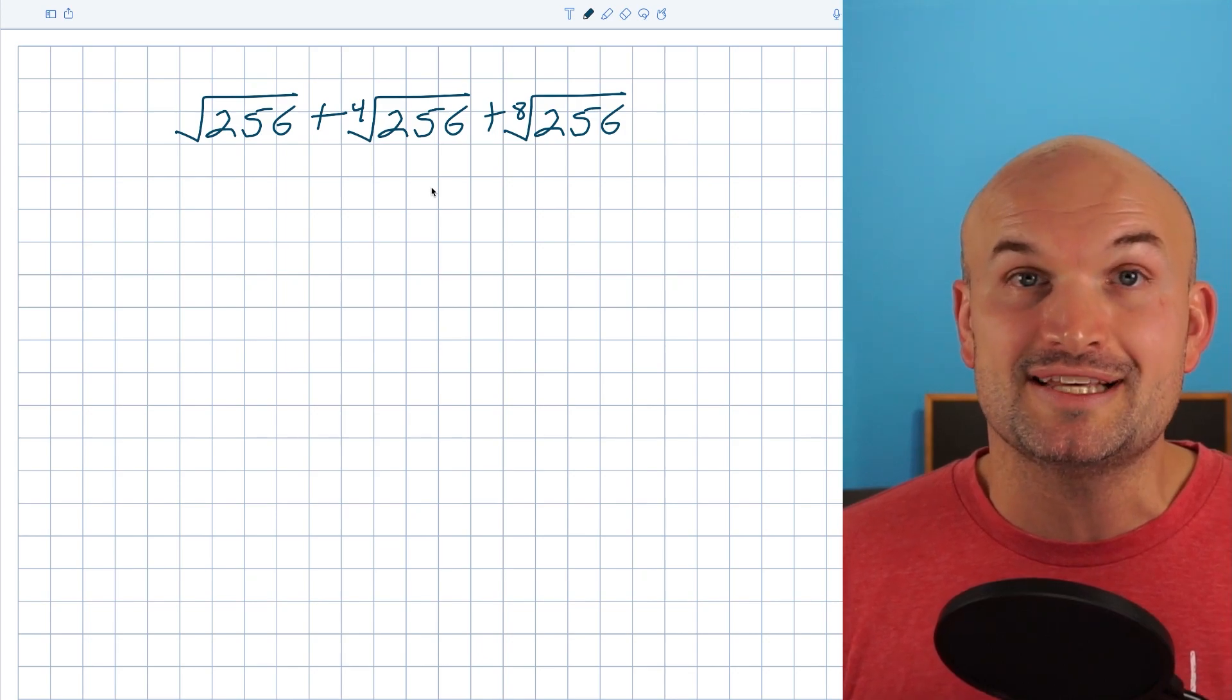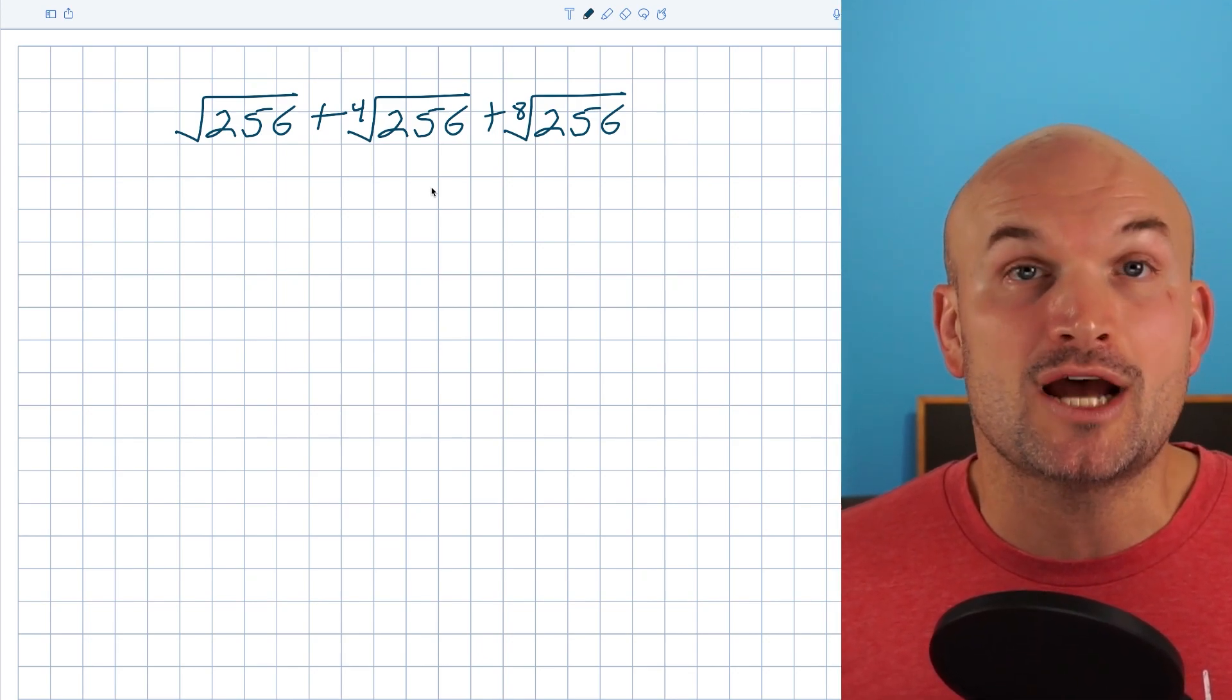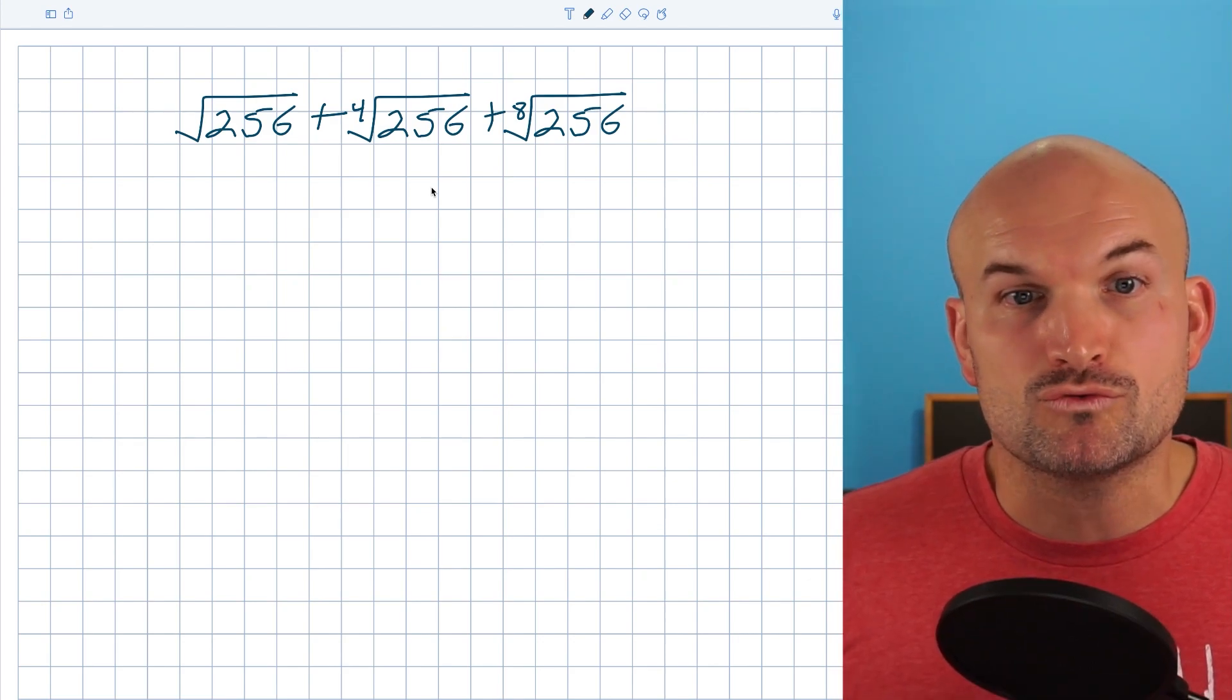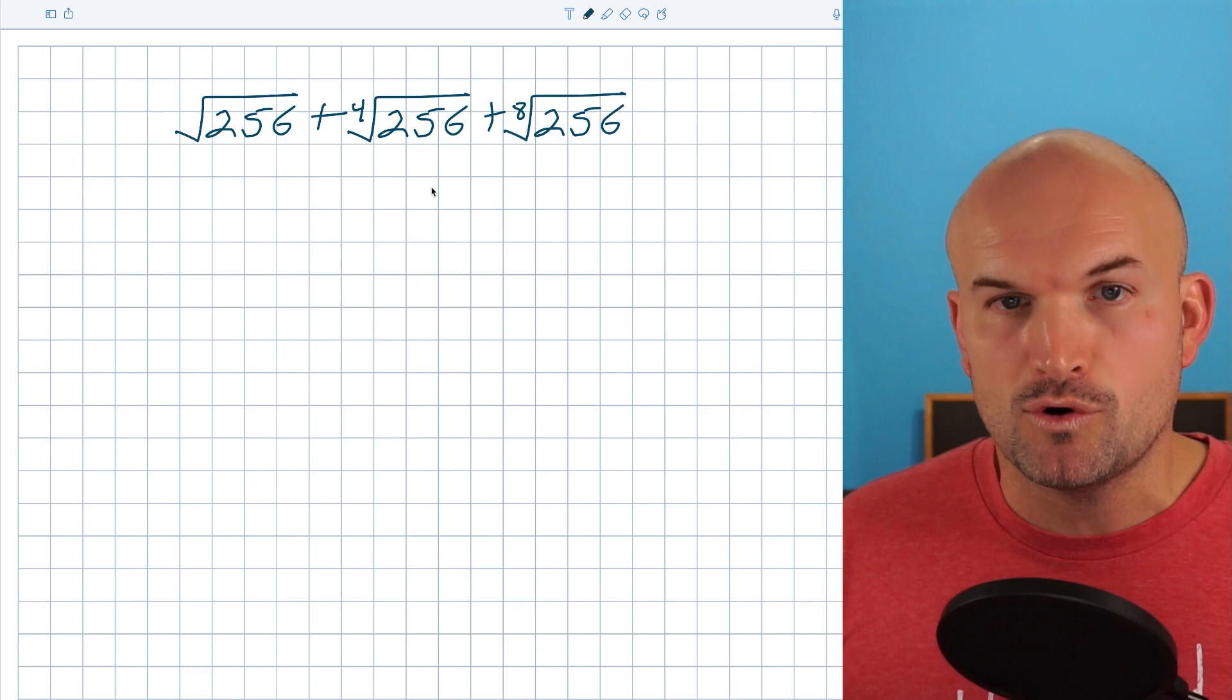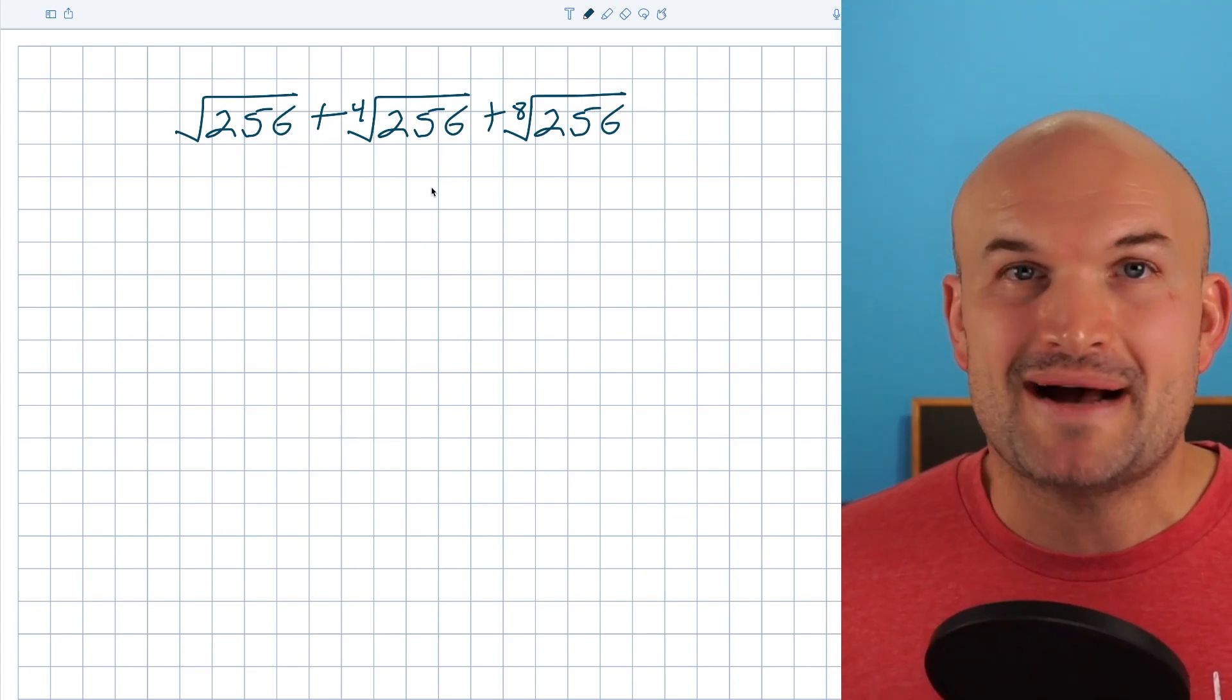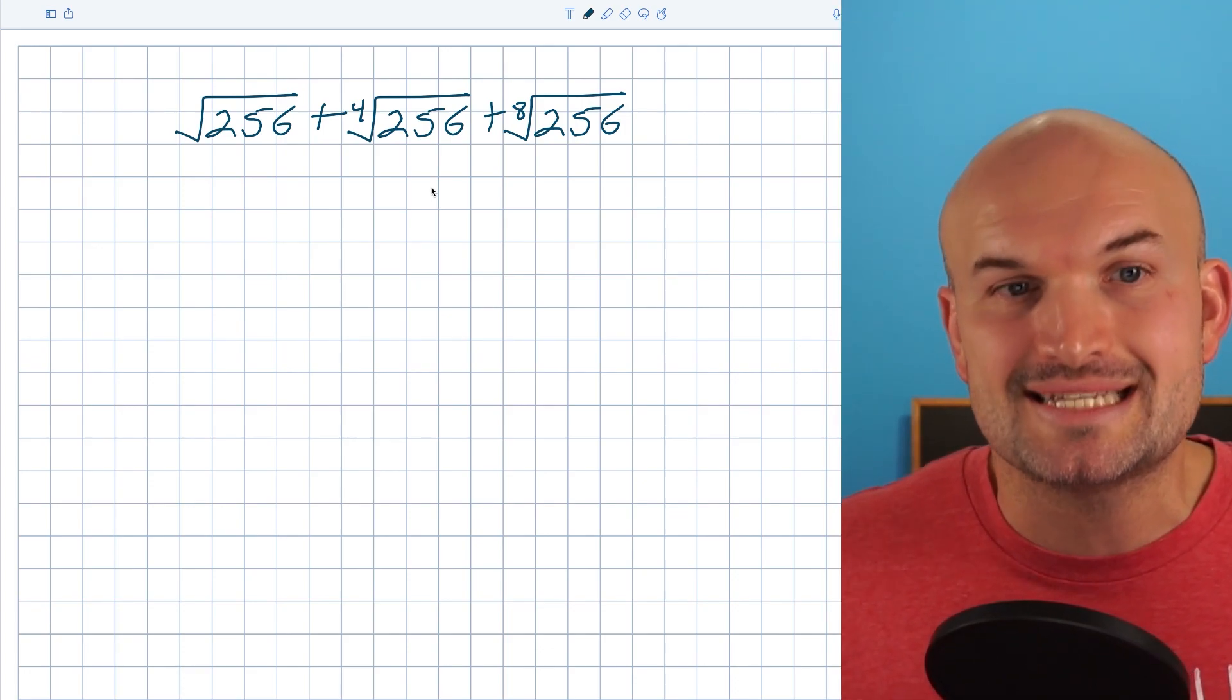I want to make sure that one thing that you are careful about is that we cannot add radicals when our index is different. So even though the radicands are the same, which is 256, since we're dealing with a square root, a fourth root, and an eighth root, we cannot combine these. What we're going to need to do is simplify them.